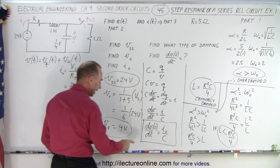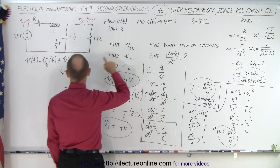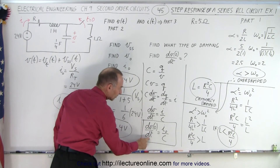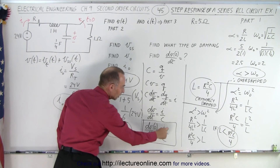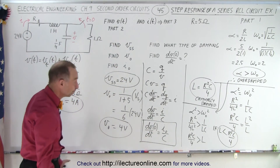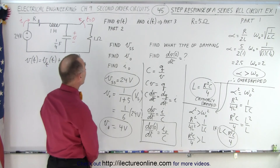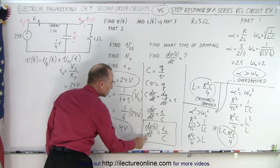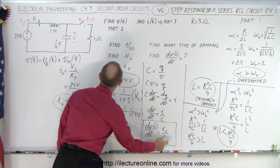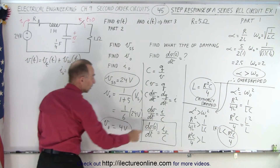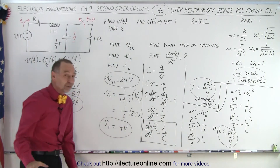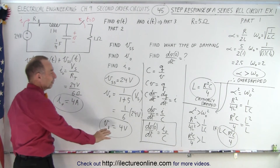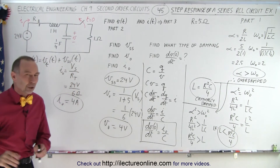We can take the voltage equation as a function of time, differentiate with respect to time, and set time equal to zero — that equals the initial current divided by the capacitance. The initial current was found to be 4 amps. So dV/dt equals 4 amps divided by the capacitance of 1/4 farad: 4 divided by 1/4 equals 16. So in this example, dV/dt at t=0 equals 16. We need this to find the constants A1 and A2 in our equation.